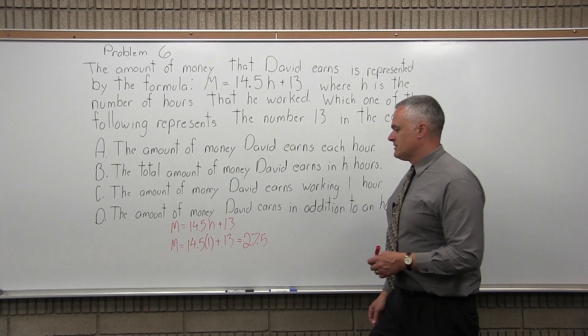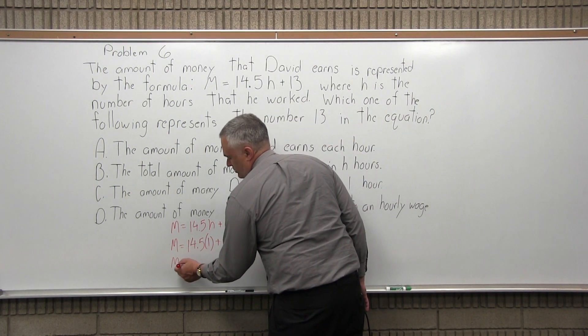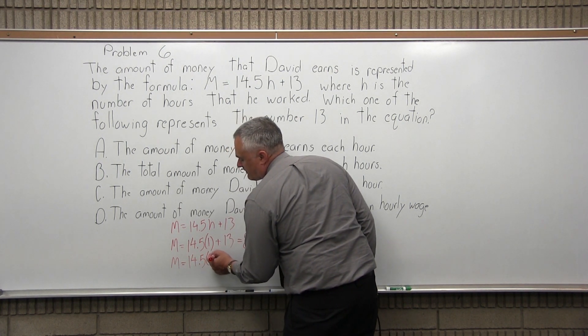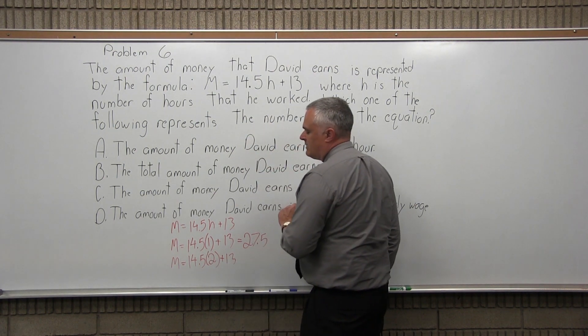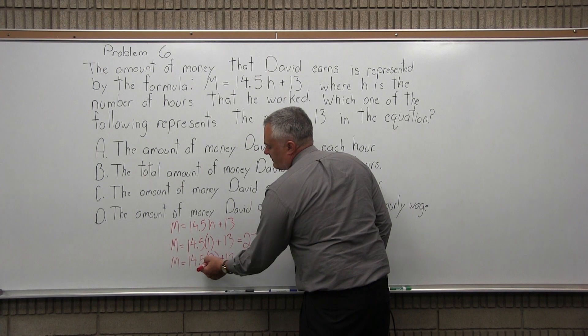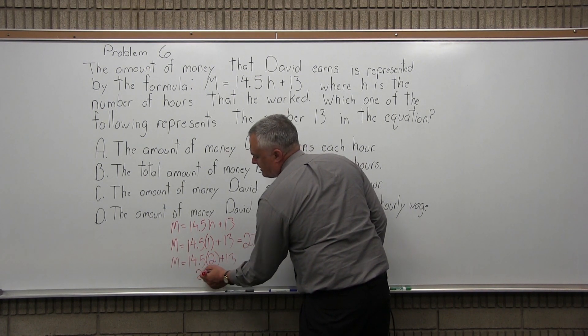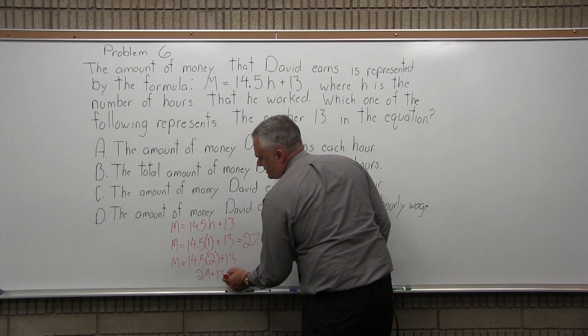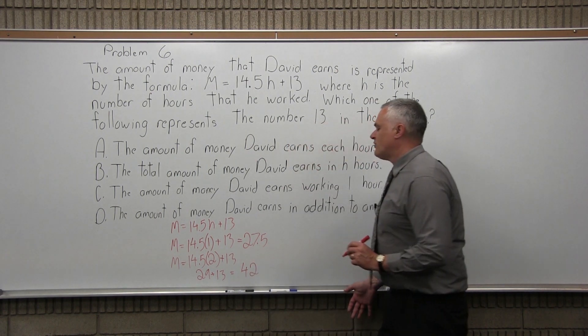What happens if he works for two hours? Put in a two for H. So 14.5 times H becomes 14.5 times 2 if he works for two hours, plus 13. 14.5 times 2, you're going to double it, you're going to get 29. And you get 29 plus 13, which is 42. So in two hours, he makes 42 dollars.